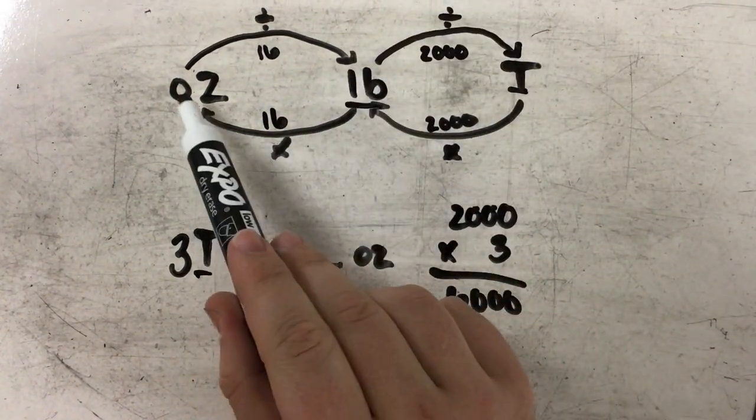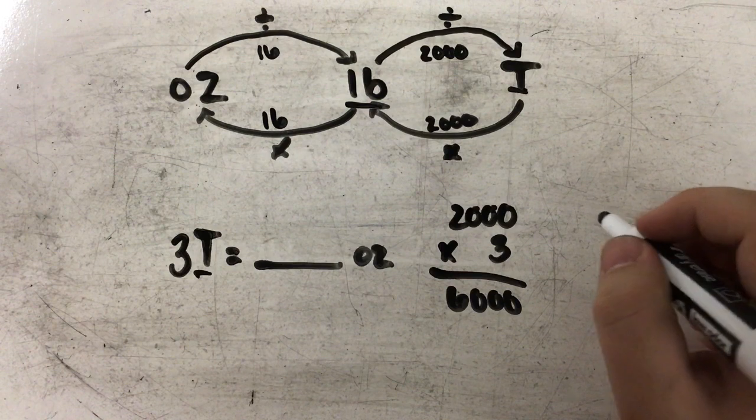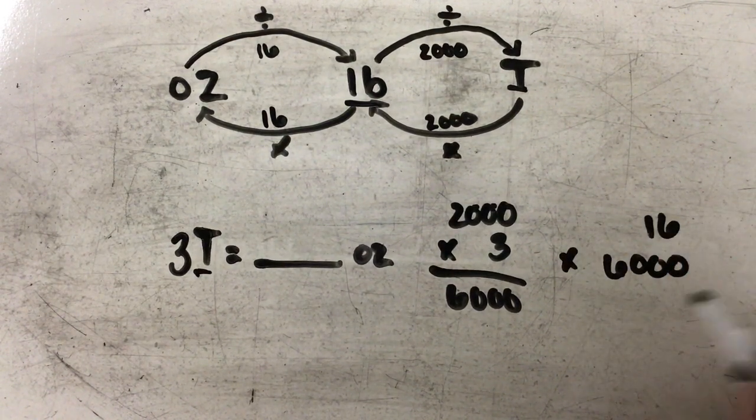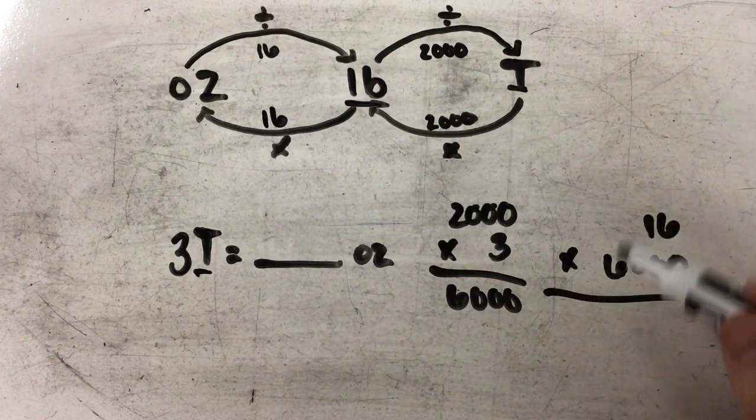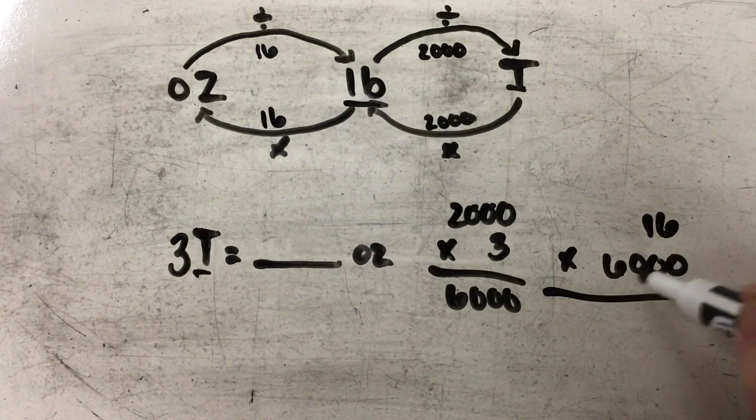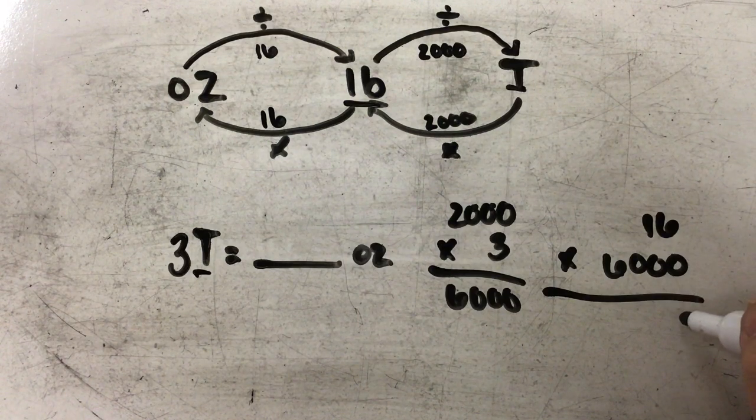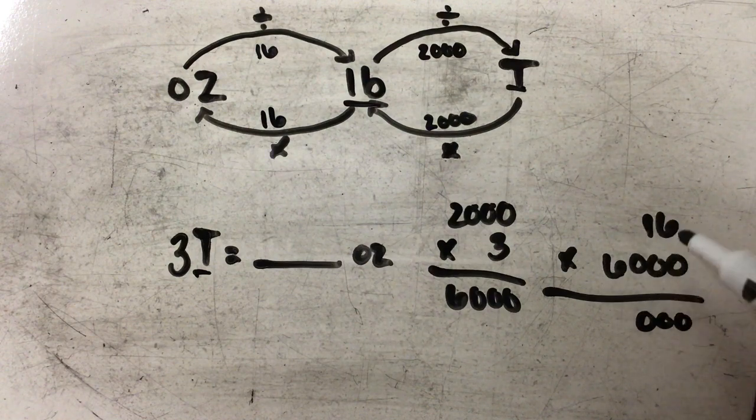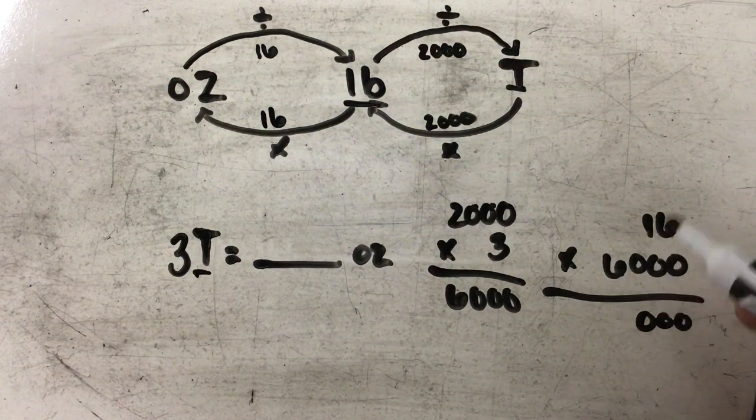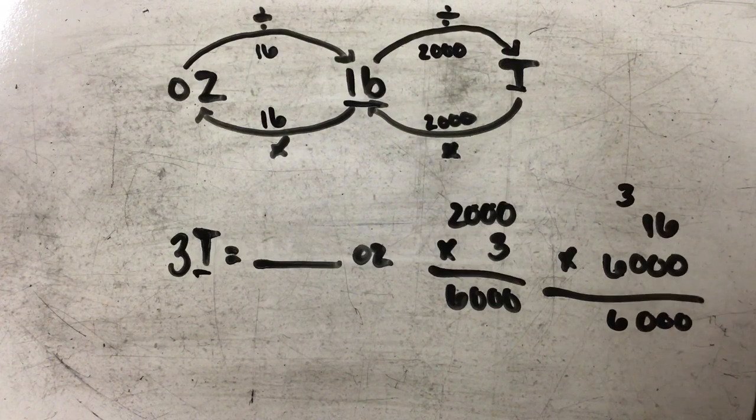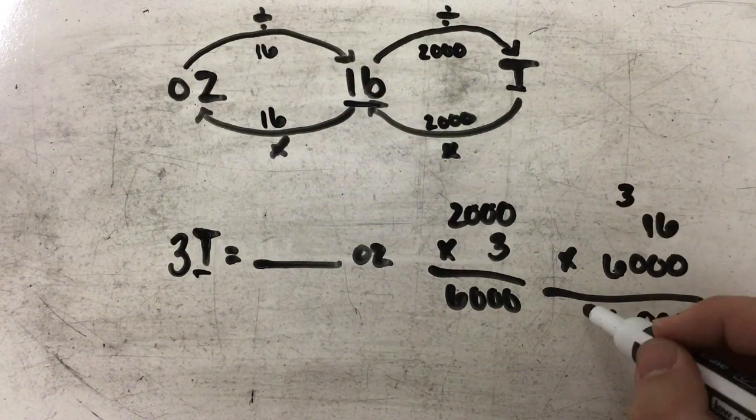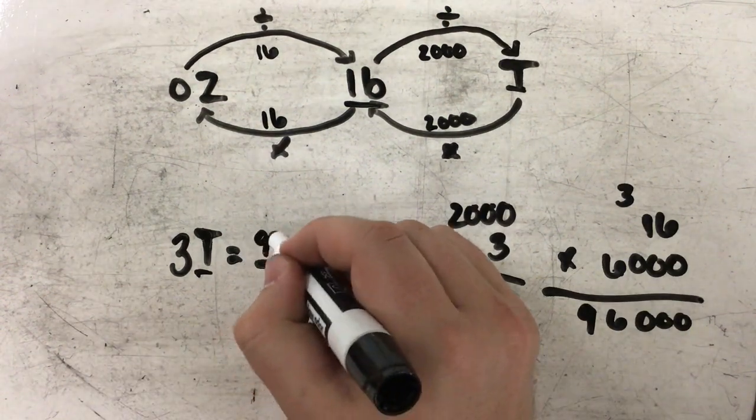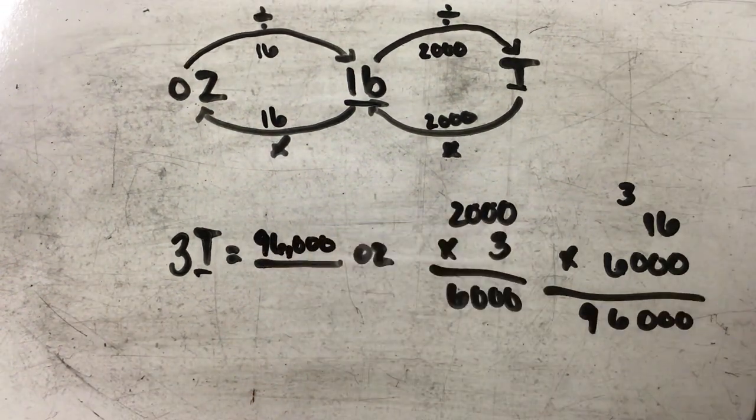And in order to get to ounces, I'm multiplying by 16. Now again, when I'm multiplying by large numbers of zeros or by numbers with zeros at the end, all I need to do is just bring those zeros down, and then I'm really just going to multiply 6 times 16. So 6 times 6 is 36, and 6 times 1 is 6 plus 3 is 9. So it's 96 with three zeros, or 96,000 ounces.